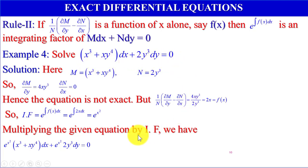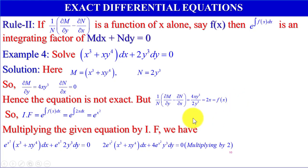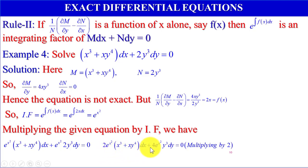Multiplying both sides by 2, we get 2 times e to the power x squared times (x cubed plus x y to the power 4) dx plus 4 times e to the power x squared times y cubed dy equals 0.